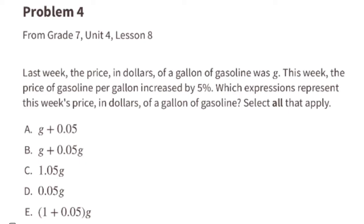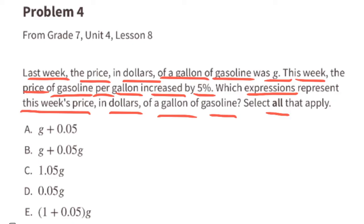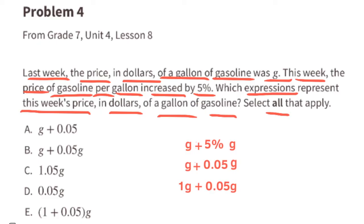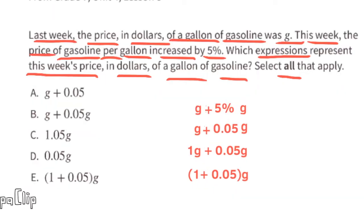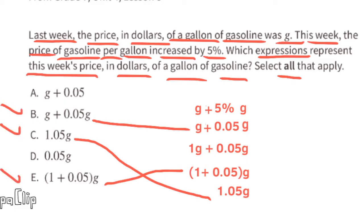Problem number four from 7th grade Unit 4 Lesson 8: last week the price of a gallon of gasoline was G. This week the price increased by 5%. Which expressions represent this week's price? This week's price is G plus 5% of G, which we rewrite as G plus 0.05G. Since G equals 1G, we get 1G plus 0.05G, or (1 plus 0.05) times G, which equals 1.05G. We can select expressions B, C, and E.